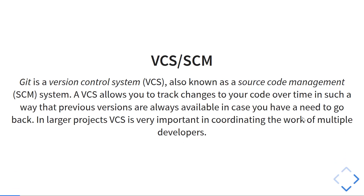Git is a version control system, also known as source code management systems. They allow you to track changes in your code over time, which means being able to go back to any particular point in time to look at the code and see what it was like and see the changes made over time. In larger projects, version control is very important for coordinating the work of multiple developers.